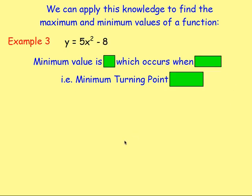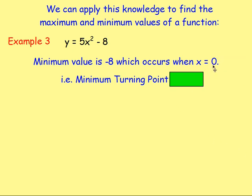Example three: y equals 5x squared minus 8. You're squaring something so the smallest value you can get is zero. If you times that by five it's still zero, but then you're taking away eight, so you go from zero to negative eight. So that is the minimum value, and that occurs when the thing you are squaring equals zero — here we're squaring x, so x must equal zero. So the minimum turning point is (0, −8).